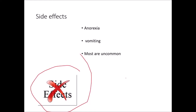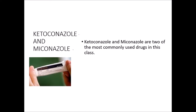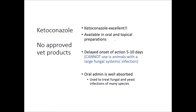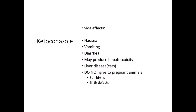Ketoconazole and miconazole are the two most commonly used drugs in this antifungal class. Ketoconazole is excellent and available in both oral and topical preparations. Remember, we also use ketoconazole for the endocrine disorder Cushing's disease. There are no vet-approved products, so we have to be aware this is used off-label. These can have a delayed onset of action of about 5 to 10 days. Oral administration is well-absorbed, so we use it to treat fungal and yeast infections in many species that are systemic. Side effects include nausea, vomiting, diarrhea, and hepatotoxicity — liver disease in cats. We do not want to give it to pregnant animals as it can cause stillbirths and birth defects.